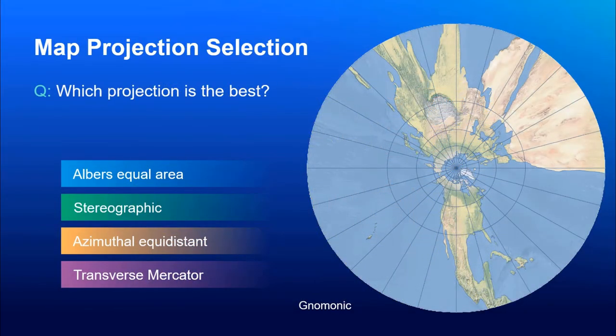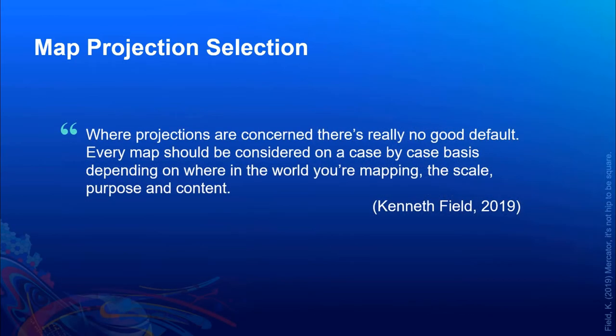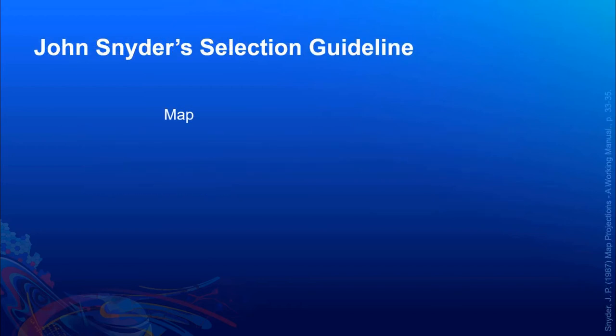Thank you, Boyan. Let's talk a little bit about map projection selection. So, which projection is the best? Below here, we've got four options. Albers equal area, stereographic, azimuthal equidistant, and transverse Mercator. And the graphic is yet a fifth projection, Mollweide. Well, it depends on what you're doing. Let's look into that a little bit more. So, Ken Field, who works at Esri and is a cartographic specialist, said in 2019, where projections are concerned, there's really no good default. Every map should be considered on a case-by-case basis depending on where in the world you're mapping, the scale, purpose, and content.